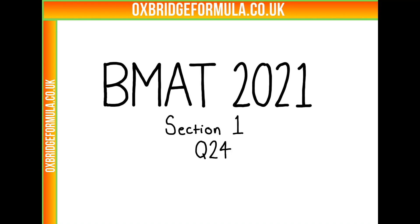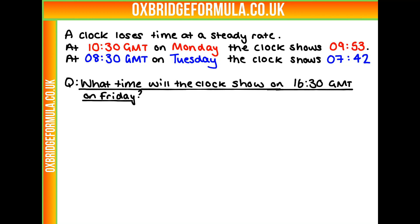This is BMAT 2021, section 1, question 24. In this question we have a clock which loses time at a steady rate. At 10.30 on Monday, the clock shows the time 9.53, and at 8.30 on Tuesday, the clock shows 7.42. We have to work out what time the clock will show at half past four on Friday.